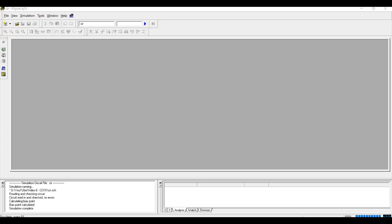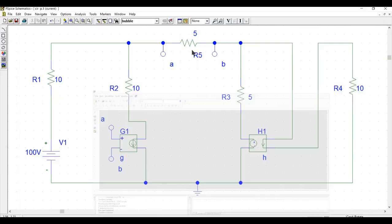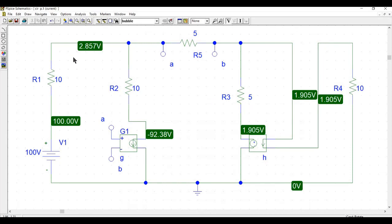you get the node voltages and also the P-Spice. So you can see that V1 is at 100V as expected. This one is at 2.85V, this one is 1.905V and this one is at 0V. So we have drawn our circuit. We can also do that by hand calculation and also check that if our result is correct or not.